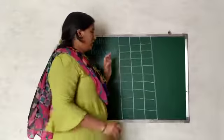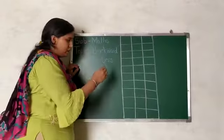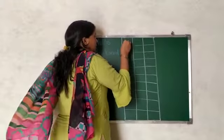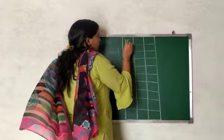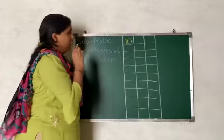Look here, see while writing backward numbers, we will write the last number first. Right, first we will write number 10, okay, we will write number 10.